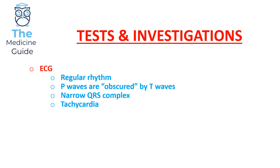To summarise, the key ECG features in a patient with SVT are: a regular rhythm, P waves obscured by T waves, a narrow QRS complex, and the patient being in a state of tachycardia.